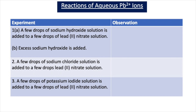In this video, we're going to see three different experiments and record our results in the following table. The first experiment is in two parts. We're going to add a few drops of sodium hydroxide solution to a few drops of lead nitrate solution and see what colour precipitate forms. Then we're going to add excess sodium hydroxide and see if the precipitate dissolves — to test if the precipitate is an amphoteric compound.